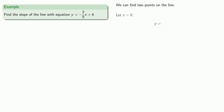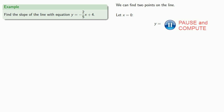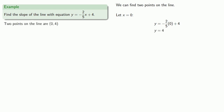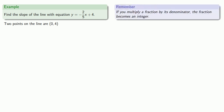Since the equation of our line is in the form y equals a formula involving x, we can choose the value of x and compute y directly. Let's let x equal 0 and find y, which gives us one of the points on the line: (0, 4). The useful thing to remember is that if we multiply a fraction by its denominator, the fraction disappears.